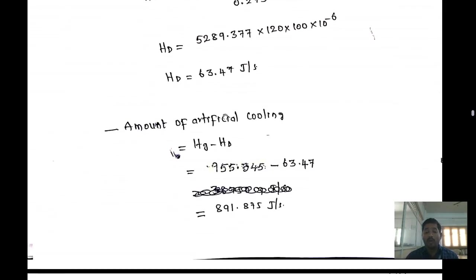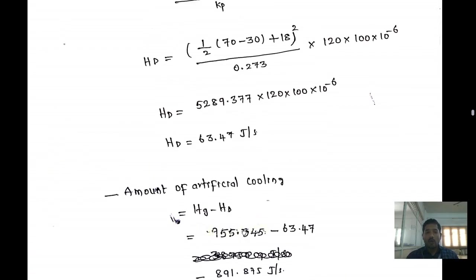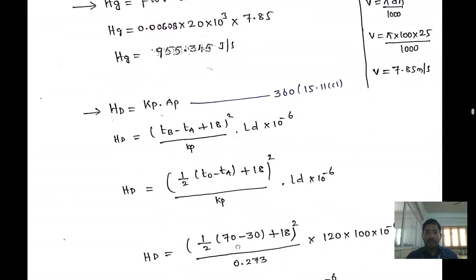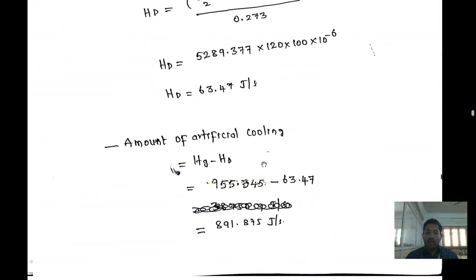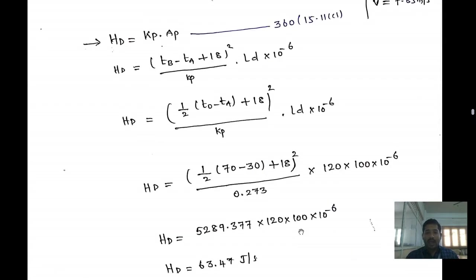Finally, the amount of artificial cooling required = Hg − Hd = 955.345 − 63.47 = 891.875 J/s. I hope there is no confusion up to this point. If you have questions, please write in the comment box, and please don't forget to subscribe to my channel. Thank you.